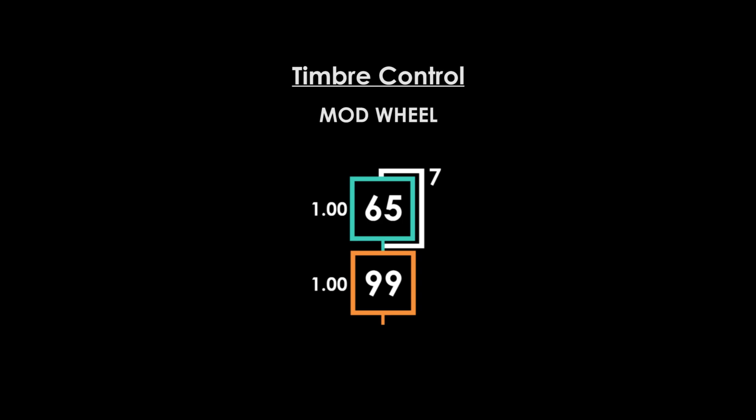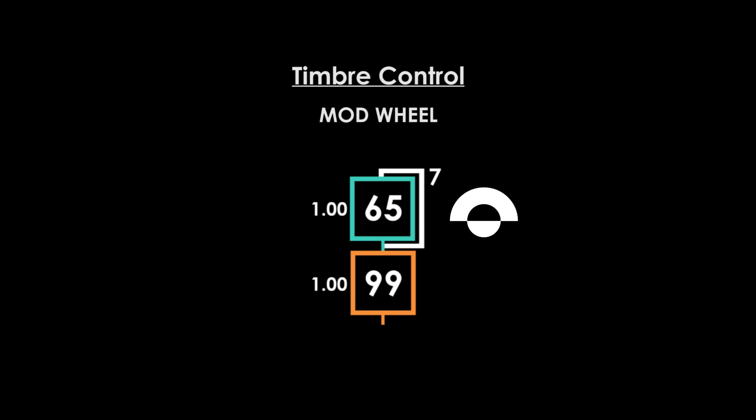Let's move on to some filtering techniques. This programming trick will allow you to use your mod wheel to increase and decrease the operator output level. Applying this to a carrier lets you control volume. Applying this to a modulator lets you control timbre and resembles the effect of a low pass filter. For this example, we'll apply it to the modulator.